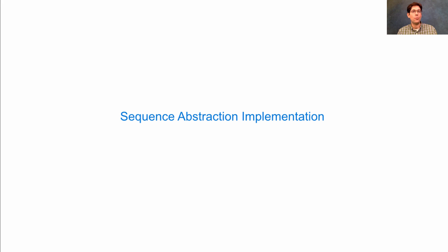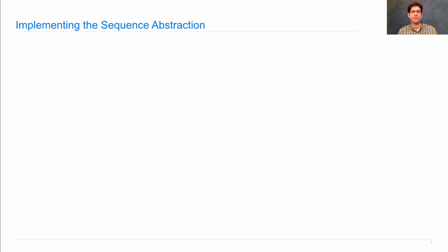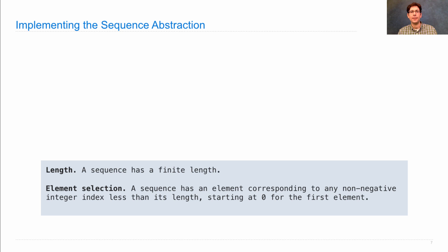I've claimed that linked lists are sequences, but in order to verify that, we need to show that we can implement the sequence abstraction. The sequence abstraction says that every sequence needs to have a finite length and support element selection, where we give it an index, and it gives us back the element at that index.